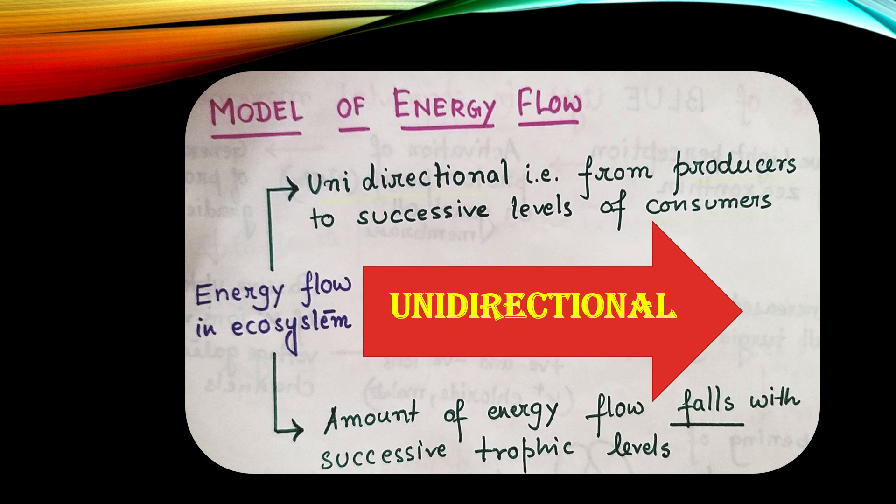And another important point is amount of energy flow falls with successive trophic levels. That means the content of energy or the amount of energy that is there in the level of producer is more than that is there in the levels of successive consumers.